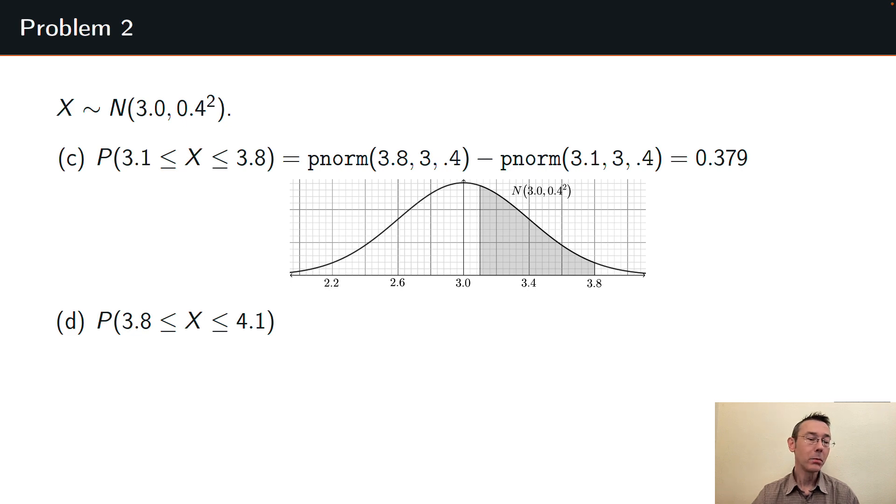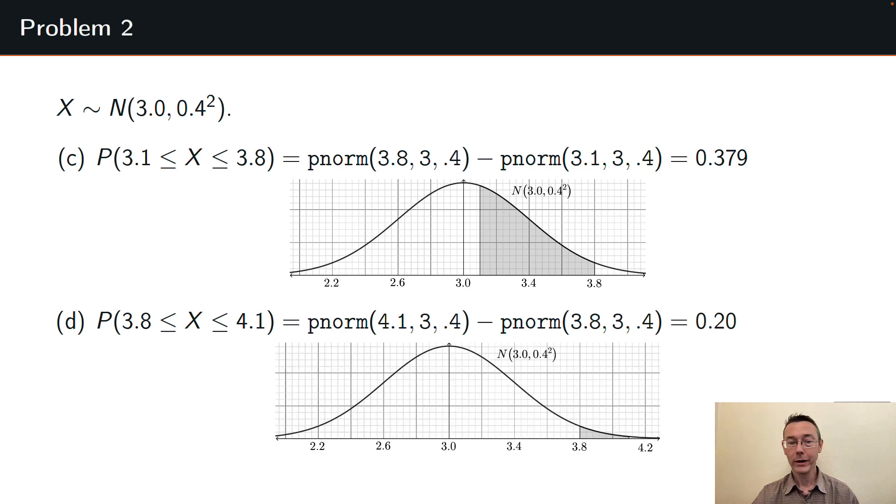Last part, the probability that X is between 3.8 and 4.1. I'm going to do this exactly the same way as part c. I'm going to take pnorm of 4.1, 3, 0.4 and subtract off pnorm of 3.8, 3, 0.4. So I'm taking the area to the left of 4.1 and then subtracting out the area to the left of 3.8. So with this picture I have here, you have to look kind of closely, but you can see that at 4.1 I have a line here. That's where my shaded area ends. So I'm doing the area to the left of that, subtracting out the area to the left of 3.8 under this same curve. And in this case, I get 0.02, I have a typo right here. I will fix that before I post my slides to GitHub. It should be 0.020, about 2% of the area under that graph, not 20%.